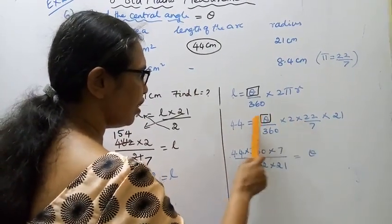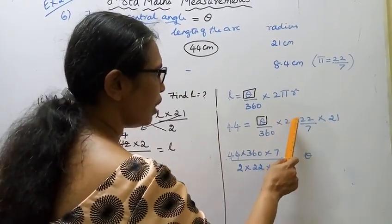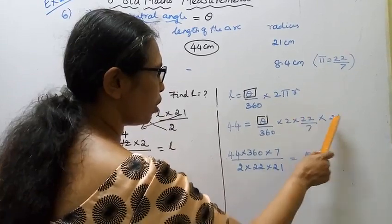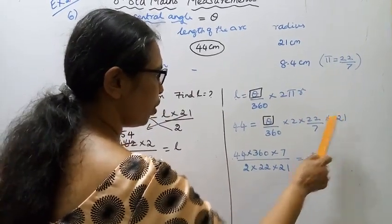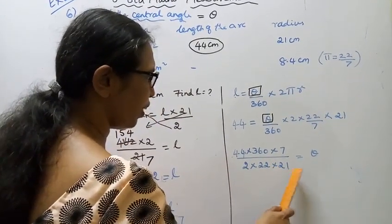So: 44 equals theta by 360 into 2 pi, with R equal to 21.